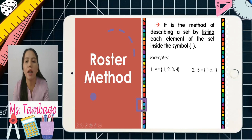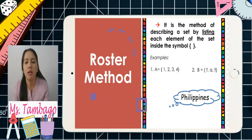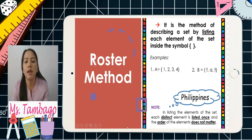Number two, we have Set B equal to {f, a, t}. That is another example of a roster method. Now, consider the word 'Philippines'. Note that in listing the elements of a set, each distinct element is listed once and the order of the elements does not matter.